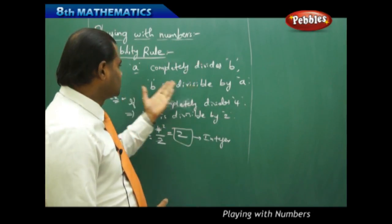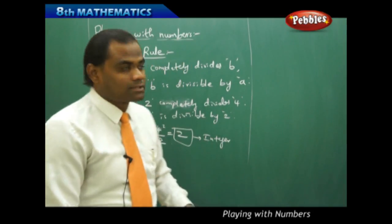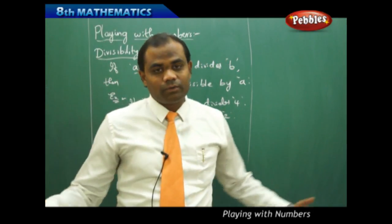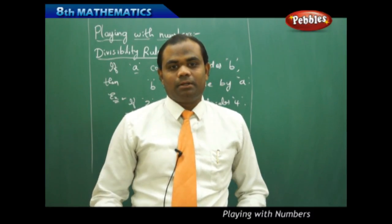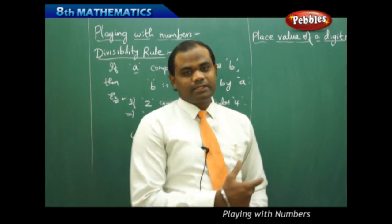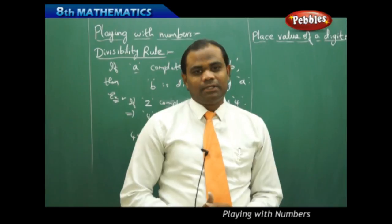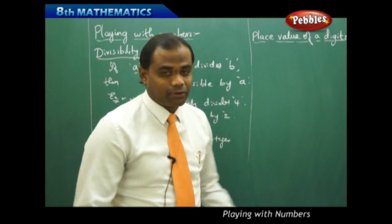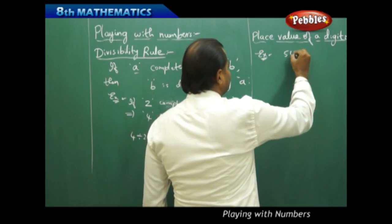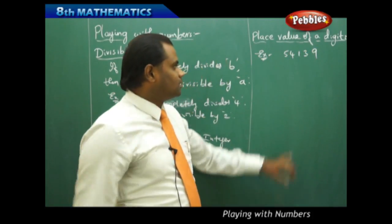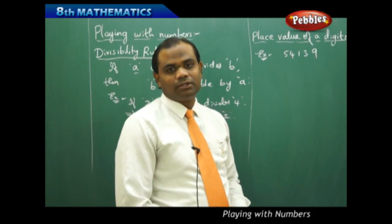This is how we understand the divisibility rule of numbers, through which we are going to play with numbers next. Let's see how we can play with numbers mathematically and enjoy the passion of playing with numbers. Now let's get into the topic of place value of a digit. For example, consider the number 54139.